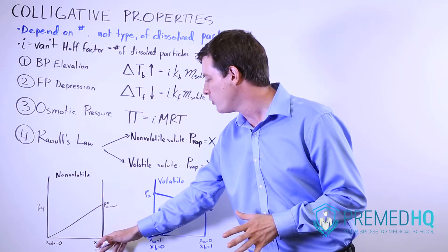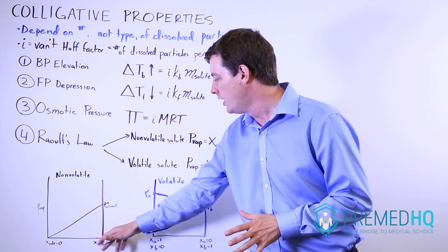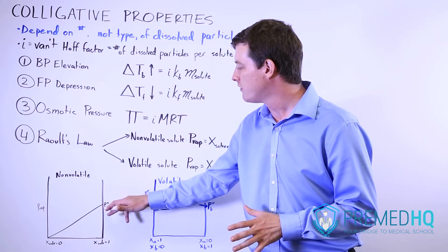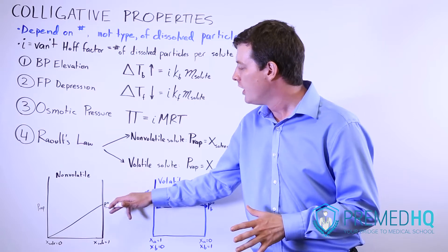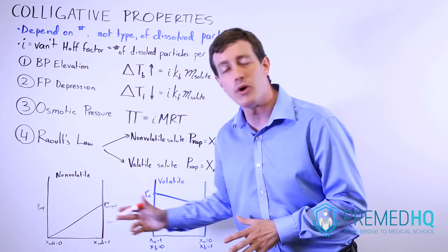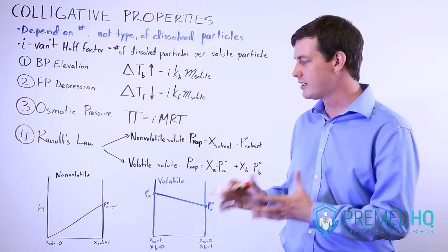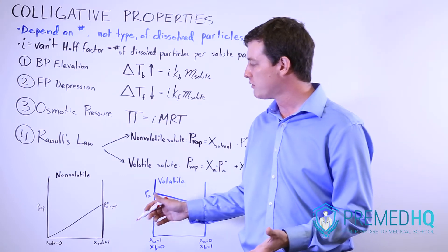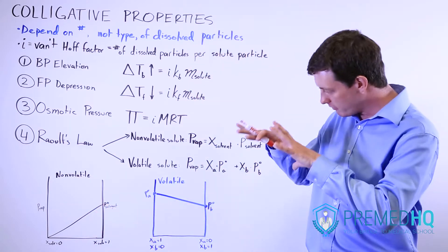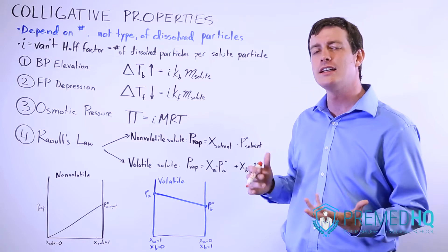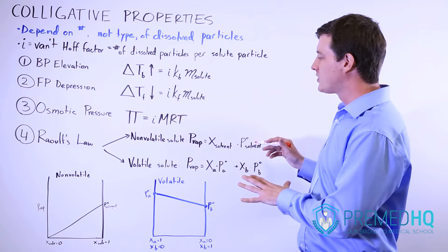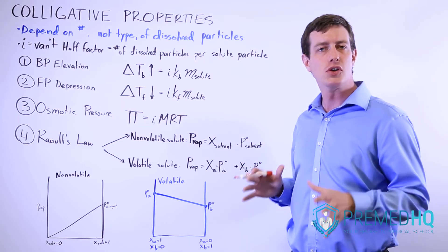Here we can see it graphed: if we have 100% solvent, or a mole fraction of 1, the vapor pressure equals the vapor pressure of pure solvent. If we move to 50% — a mole fraction of 0.5 solvent and 0.5 solute — the vapor pressure would be half of that. Adding components that don't contribute any vapor pressure lowers the overall vapor pressure relative to pure solvent.